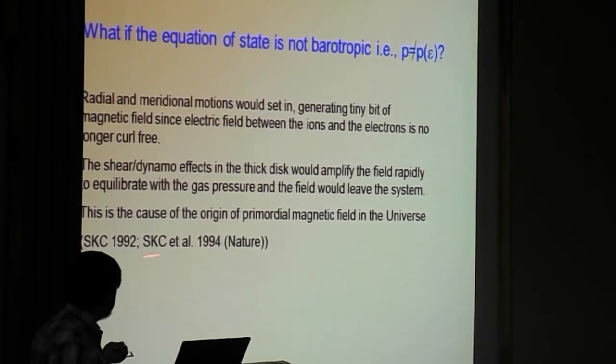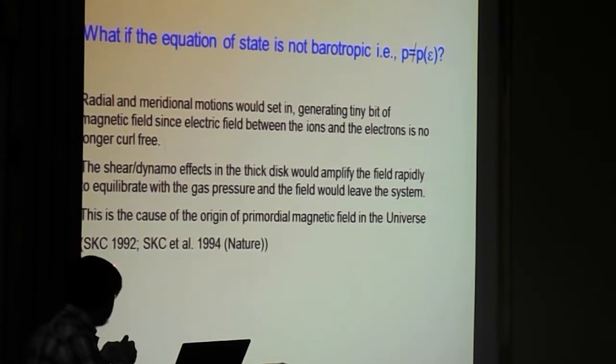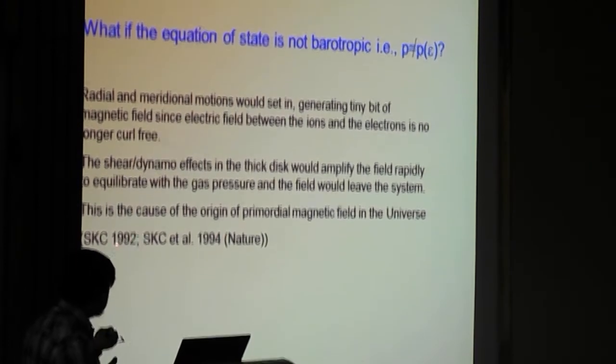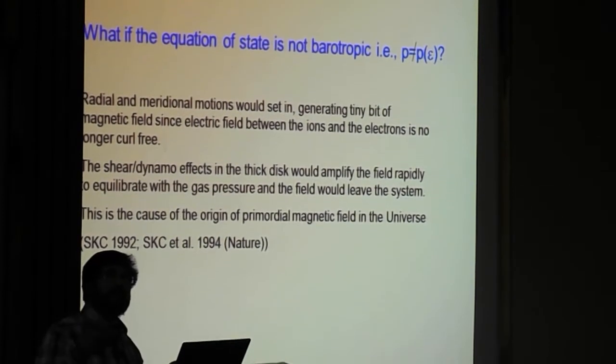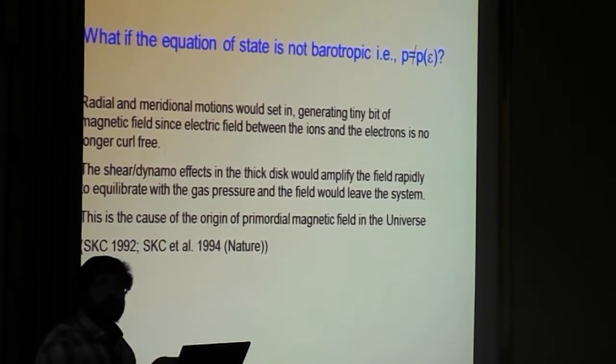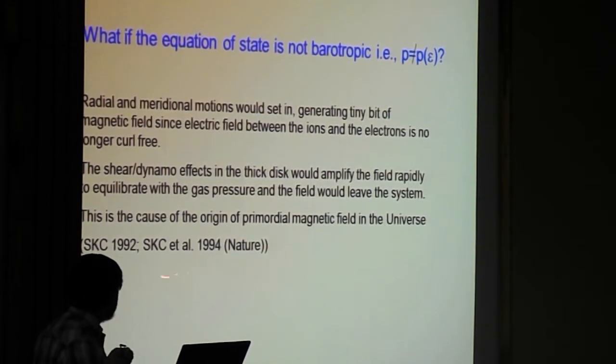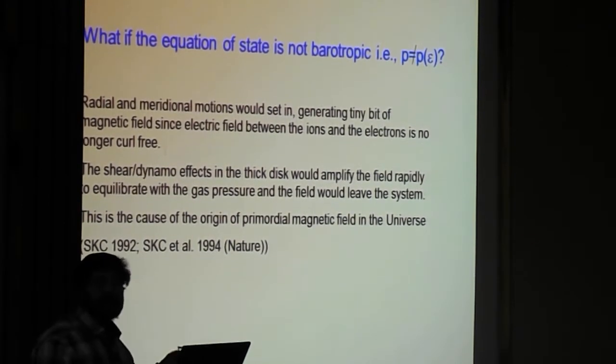And we claim, this was in our Nature paper, which is 1992, I wrote in Monthly Notices, and elaborated in Nature, we claim, that the initial, that the universe, the magnetic field of the universe, has actually came, actually started in this way, because it did not have any magnetic field, to begin with, and when the first black hole started, then you automatically have magnetic fields.